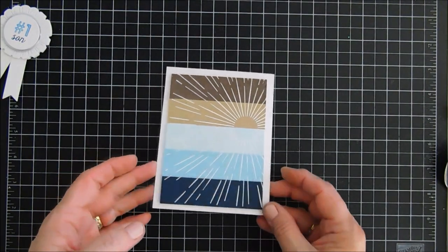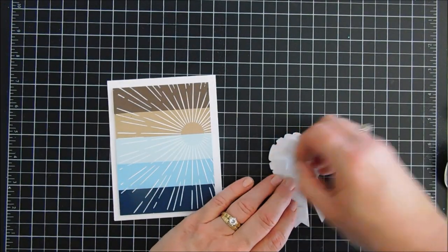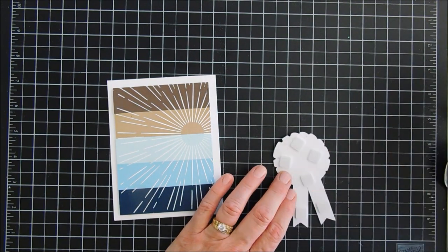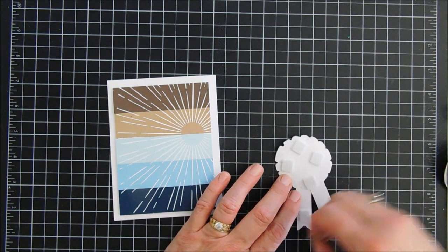And then we'll just remove the release paper off of our little award piece. You can see how I'm just flicking them all over, and I'm sure I made a few more in my white embossing powder.